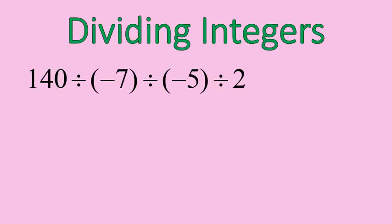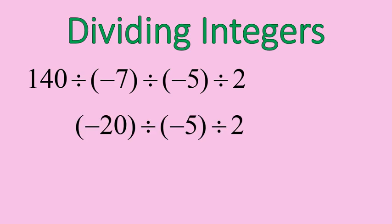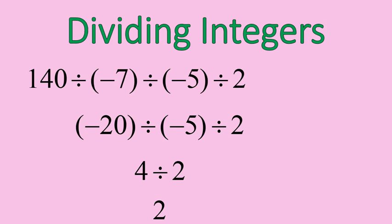Let's try out some dividing of integers. We'll take 140 divided by negative 7, which gives us negative 20. Then negative 20 divided by negative 5 gives us positive 4. And 4 divided by 2 leaves us with 2. Again, you can count the number of negatives in the original question: 1, 2 — two negatives. An even number of negatives means a positive answer. An odd number of negatives means a negative answer — but remember, only with multiplying and dividing.